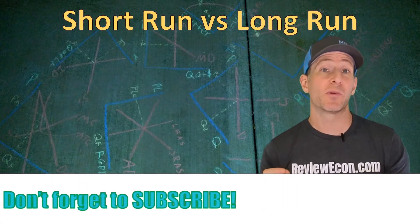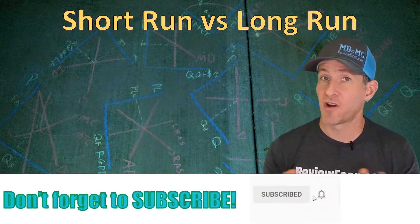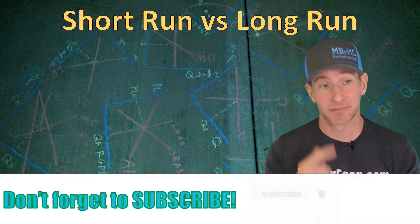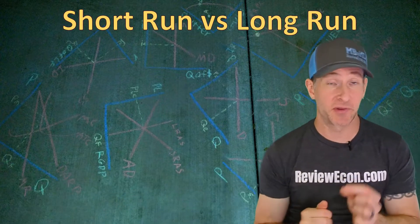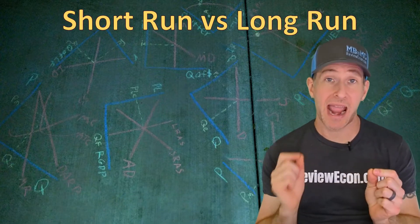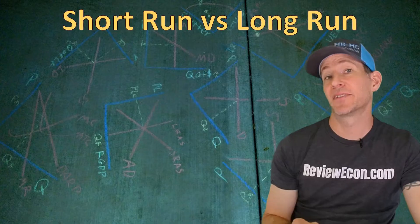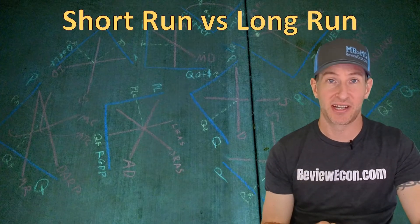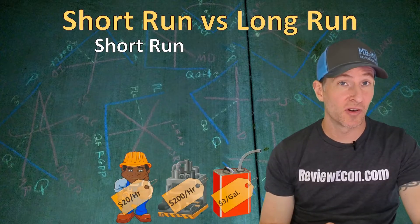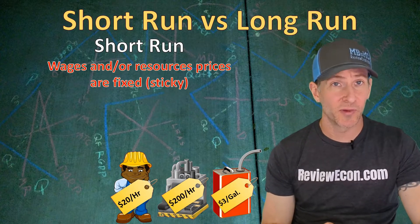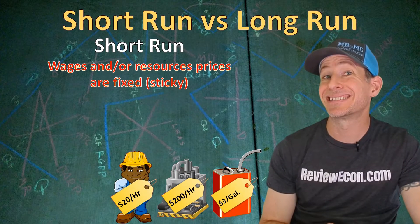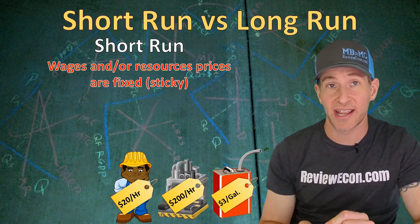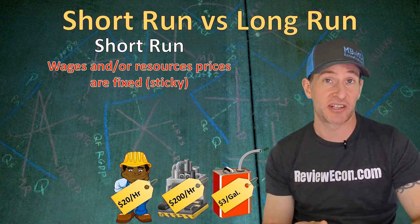You should already be pretty well aware of the AS-AD model. If you aren't well-versed on that yet, make sure you go back and watch the AS-AD model video. In this video we are talking about the difference between the long-run and the short-run. You may have learned about this difference back in micro, but we have a different definition here. For macroeconomics, in the short-run, wages and other resource prices are what are called sticky.